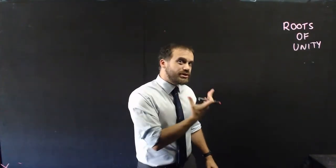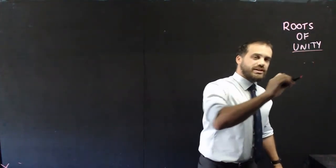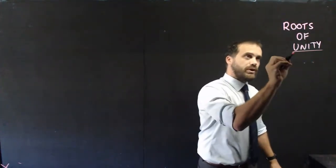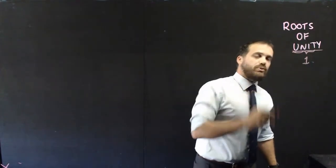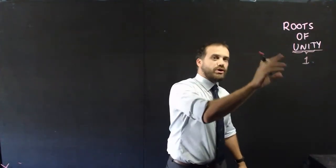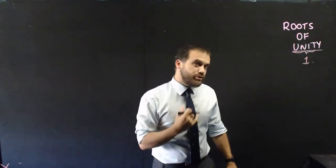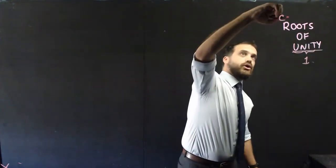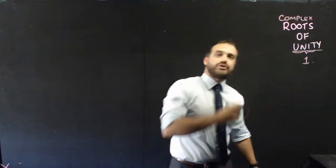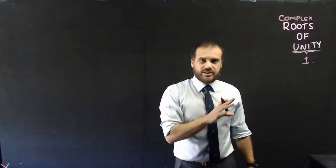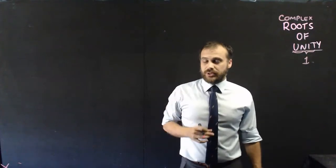What does Roots of Unity mean? I think it's a really intimidating thing. The word unity — we're dealing with the word unit, which is the number one. So we're looking at roots of the number one. When we're dealing with Roots of Unity, we're dealing with complex roots of unity. So now that we understand what we're doing — complex roots of one — let's see what it looks like.